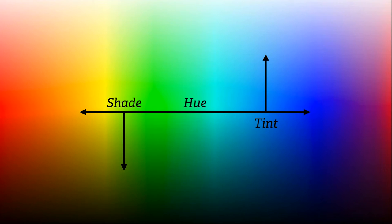So you can see on the spectrum there — hue moves this way, it gets lighter as you move up, and darker shades move down, or around depending on how this is shaped, but for now up or down.